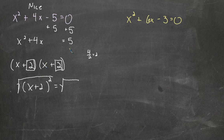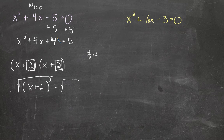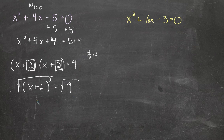So far, everything written in white up to here is no different than before — I've just moved the 5 to the other side. But when I multiply x plus 2 times x plus 2, I get x squared plus 4x plus 4. When I multiply 2 times 2, I get 4. When I add 4 to this side, that's something new — it was not in the original equation. So I've added 4 to the left side, so I have to add 4 to the right side. On the right side, I have 5 plus 4, that's 9.